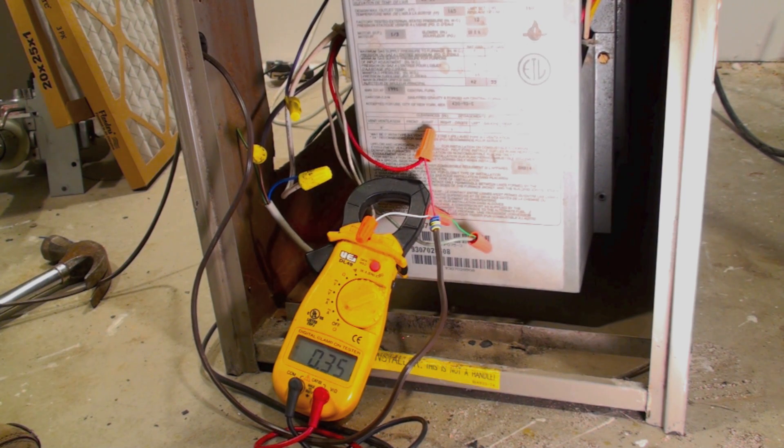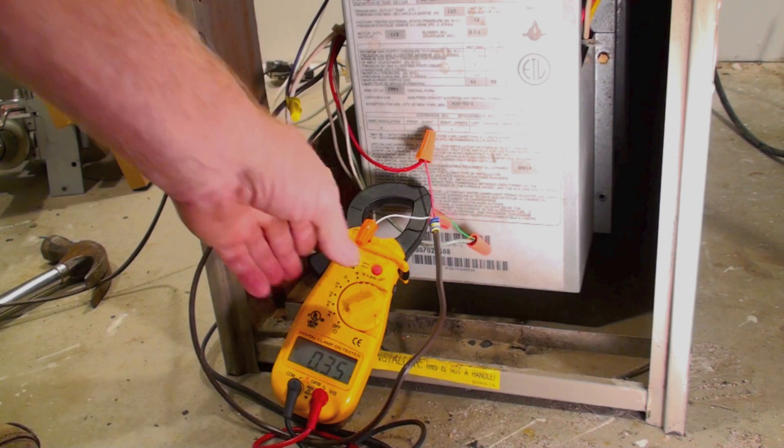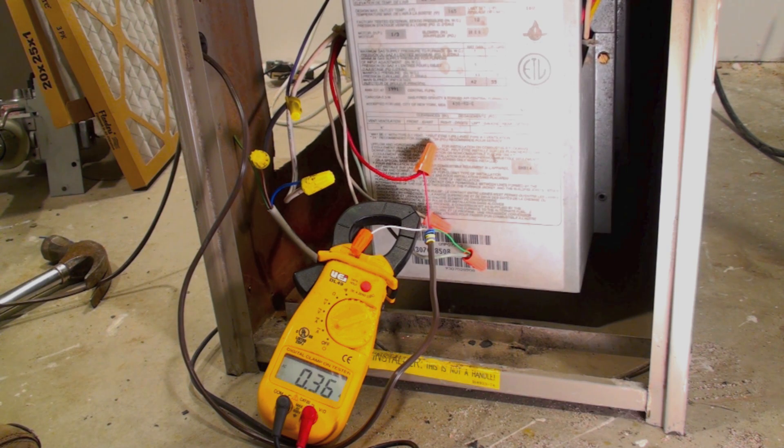Okay, the fan has come on. It doesn't seem to make a lot of difference. So, what my amp draw is 0.36, 0.35. Now, I'm going to set that on the anticipator.